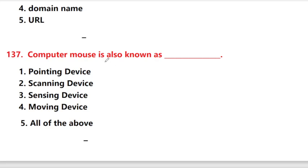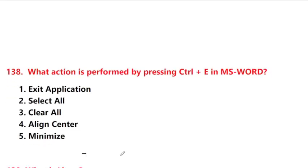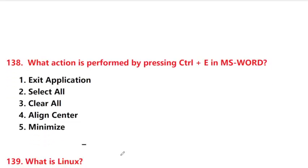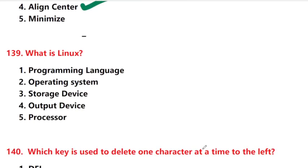A computer mouse is also known as — pointing device, scanning device, sensing device, moving device, or all of the above? Answer is option 1: pointing device. What action is performed by pressing Ctrl + E in MS Word? Answer is option 4: align center.